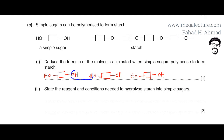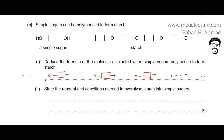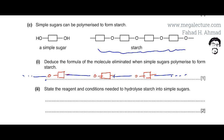In the condensation reaction, one molecule loses an OH group and the other loses a hydrogen; this continues along the chain as lots of glucose molecules get connected. The OH and H combine to form water molecules which are eliminated. So the answer to this part is that water (H₂O) is the molecule eliminated when simple sugars are polymerized to form starch.